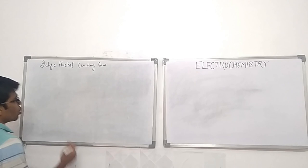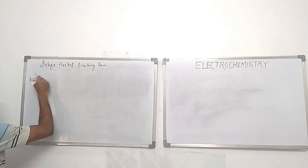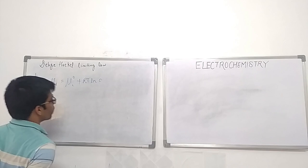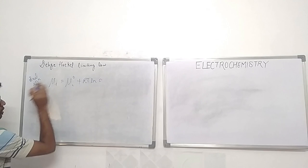If we consider the case of ideal solutions, for an ideal solution, we have chemical potential μᵢ equals to the chemical potential of the ideal solution at standard conditions plus RT ln C, where C is the concentration and μᵢ₀ is the chemical potential at standard temperature and pressure.